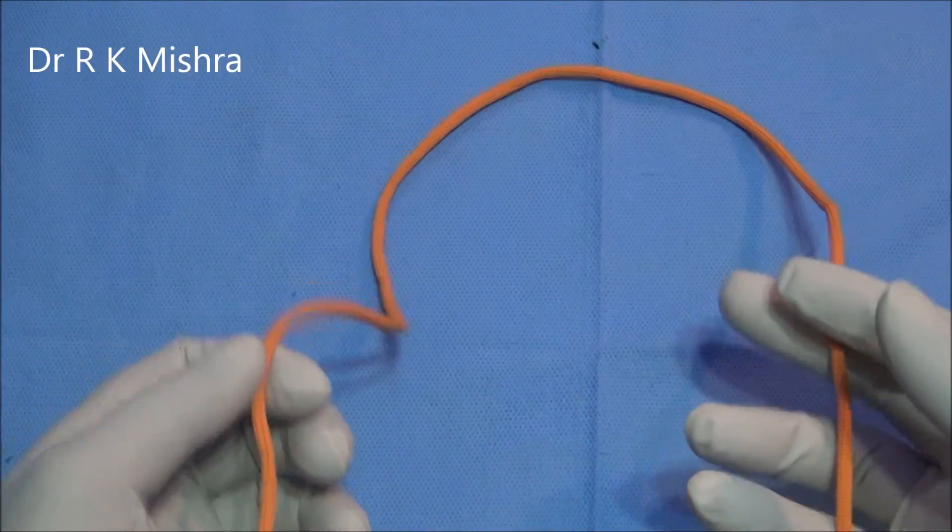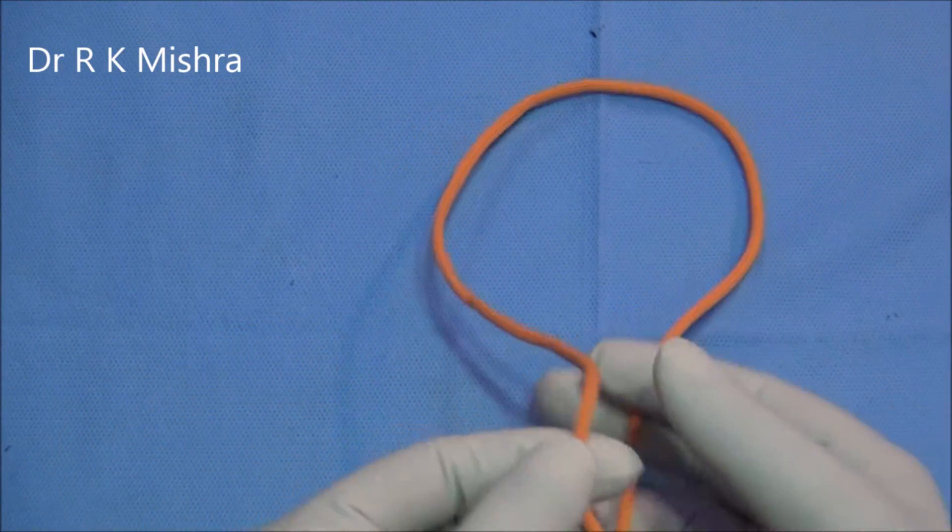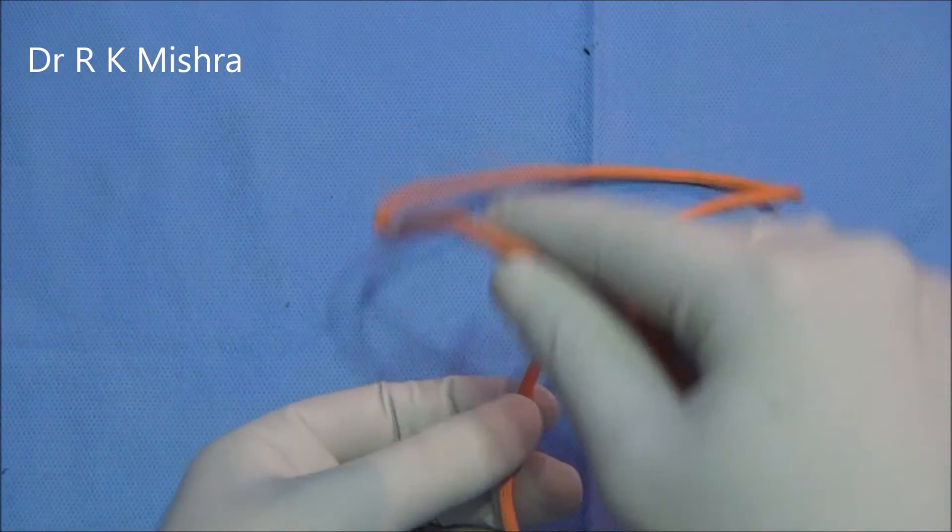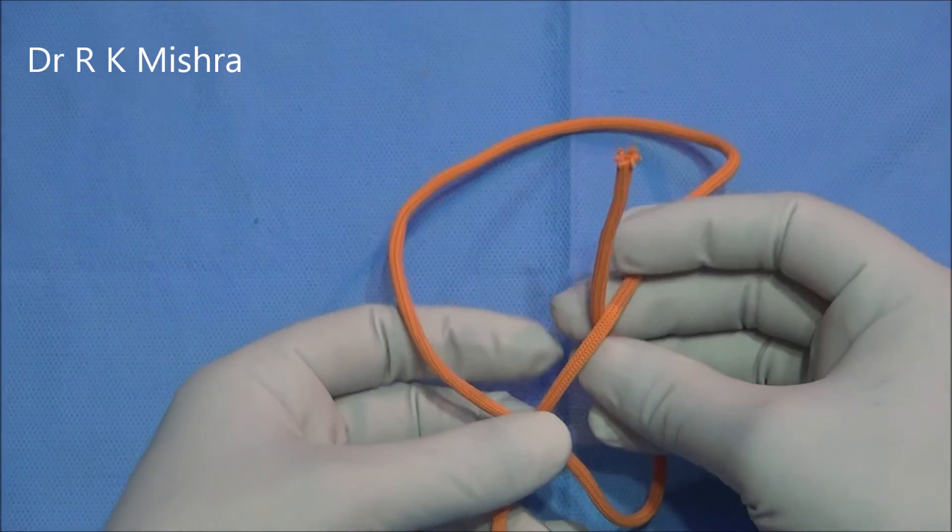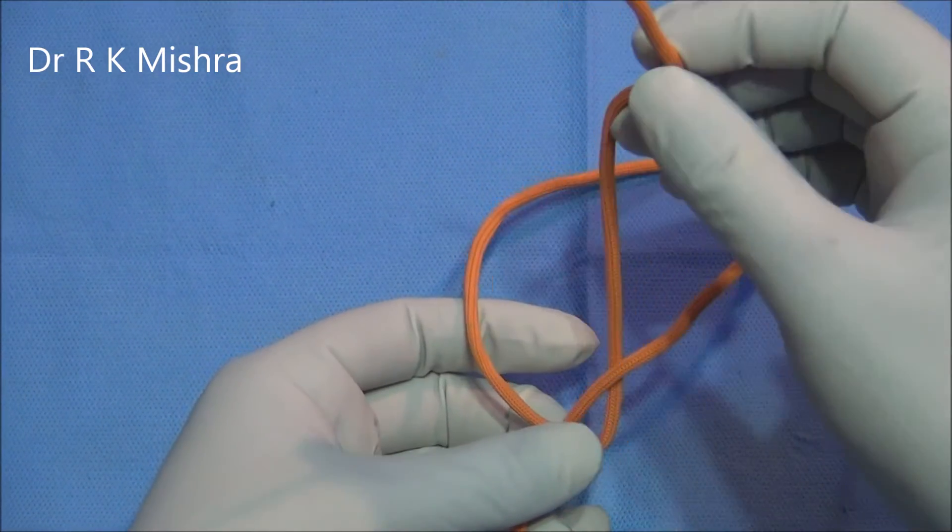This is the short limb, this is the long limb. Put the shorter over the longer, and then go from below. This creates a single hitch.